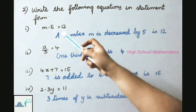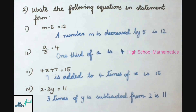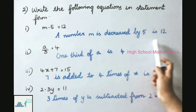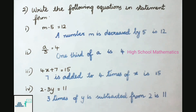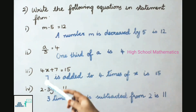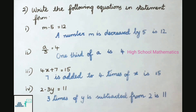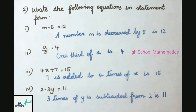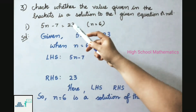Question 2: write the following equations in statement form. First, m − 5 = 12: a number m decreased by 5 is 12. Second, a/3 = 4: one-third of a is 4. Third, 4x + 7 = 15: 7 is added to 4 times of x is 15. Fourth, 2 − 3y = 11: 3 times of y is subtracted from 2 is 11.